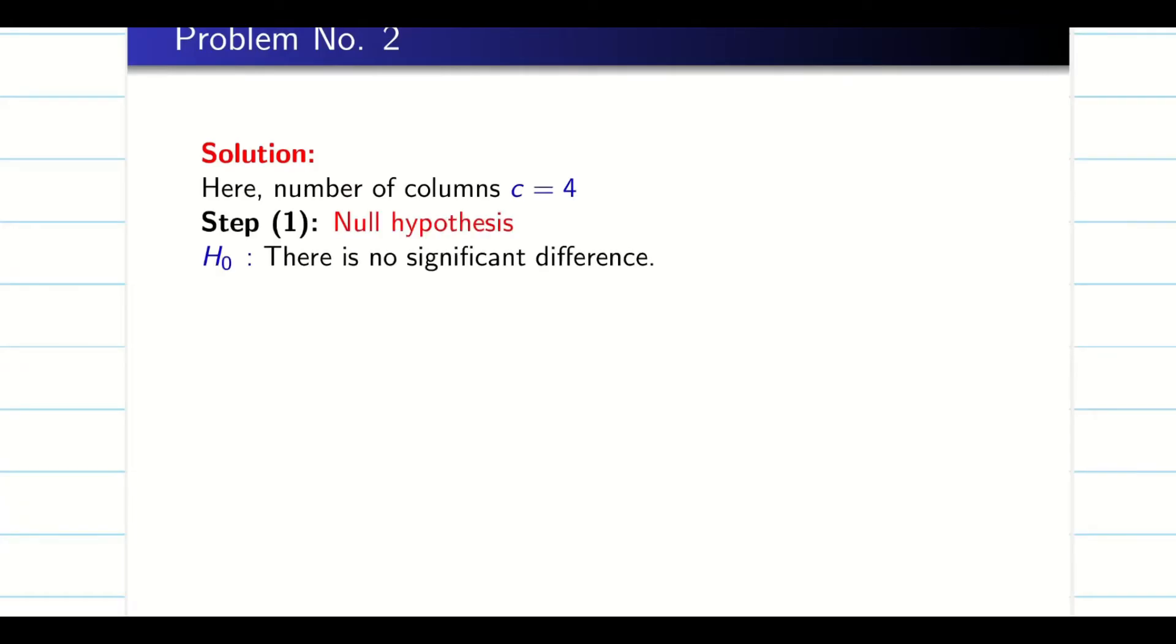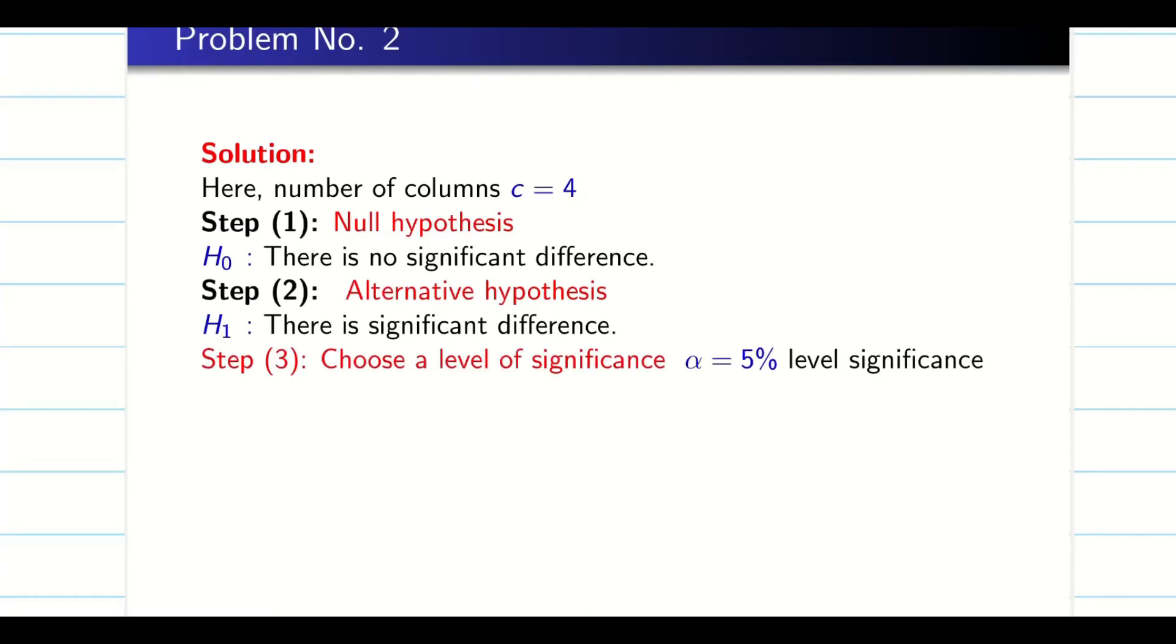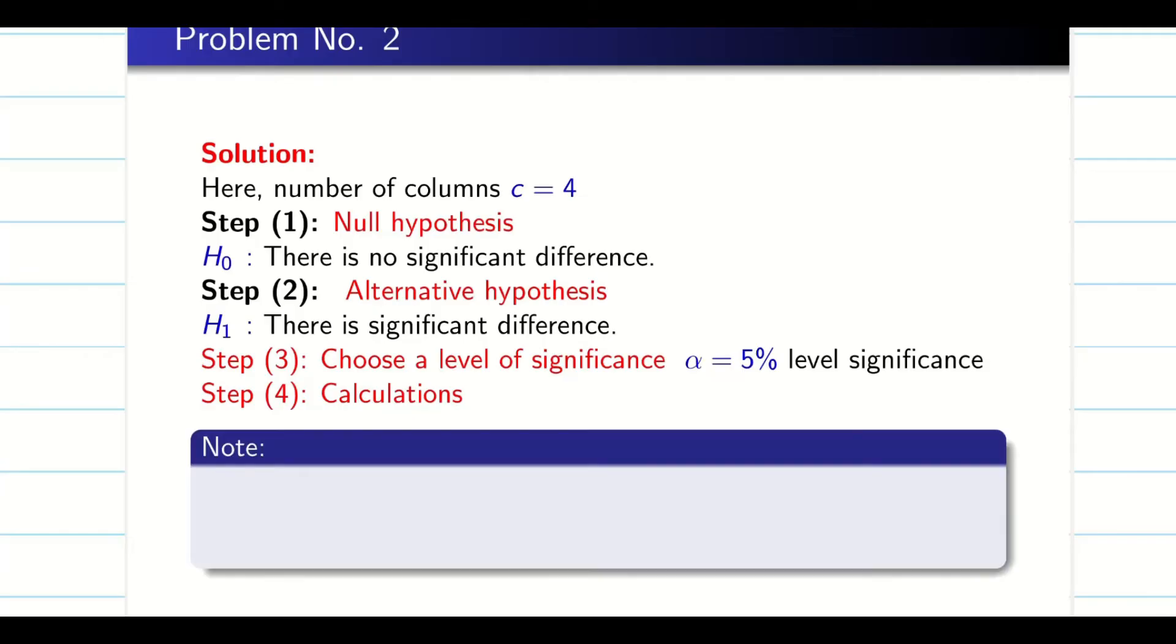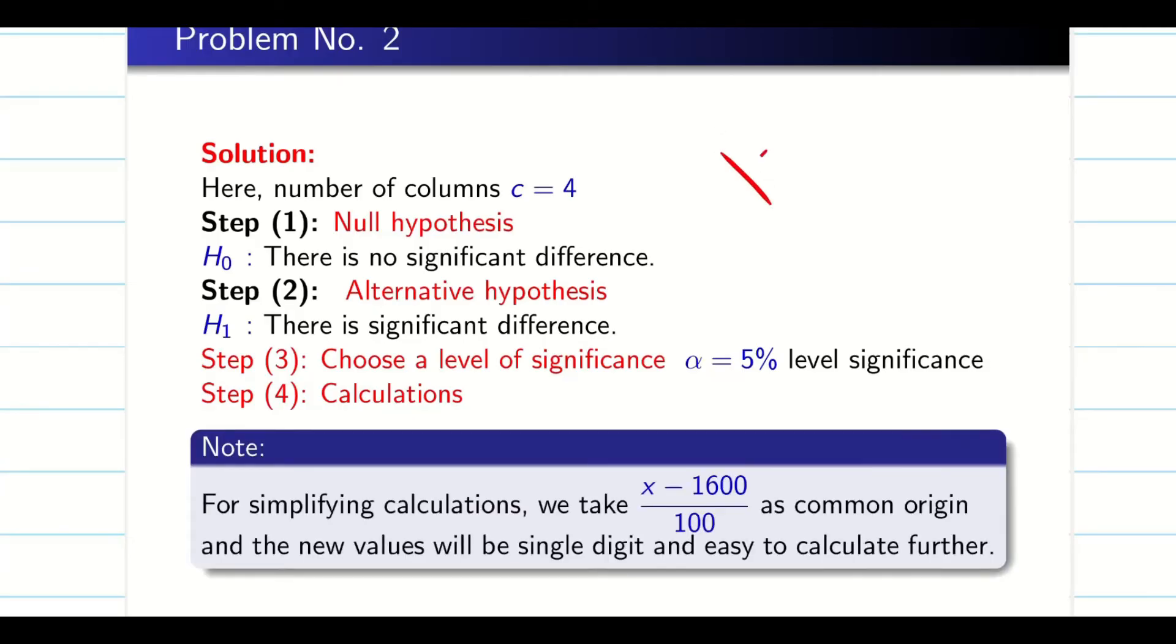Null hypothesis: there is no significant difference. Alternative hypothesis: there is a significant difference. Alpha as usual, 5%. As I said initially, I am going to take X as my data given in the question, subtract with 1600, divide by 100.